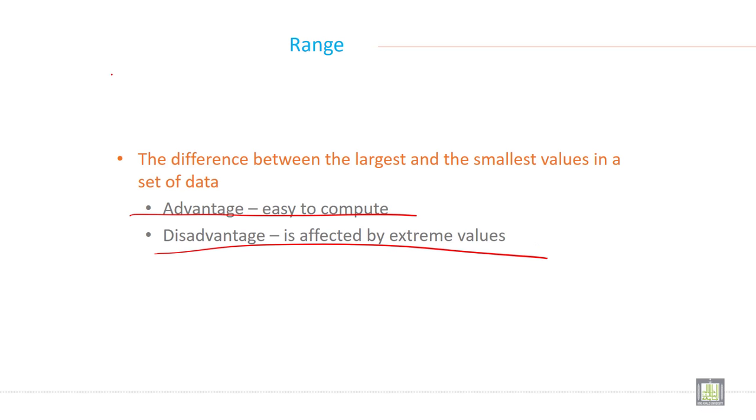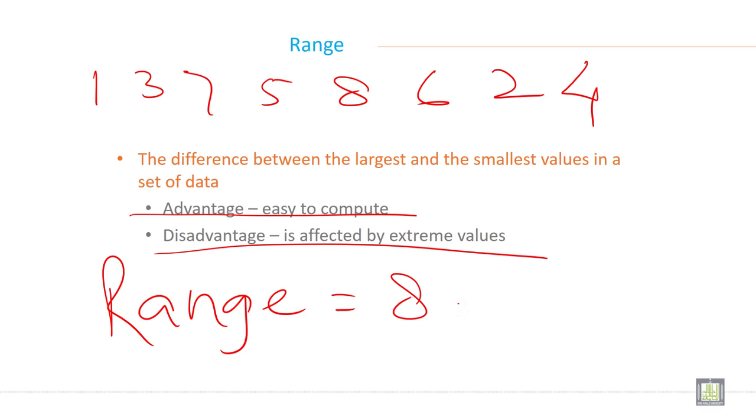For example, you have a data set like this: 1, 3, 7, 5, 8, 6, 4, 2. This is the data you have. So what is the highest number? If you want to calculate range, range is equal to the highest number, which is 8, minus 1, which equals 7. Highest minus lowest number. This is the range and the procedure.